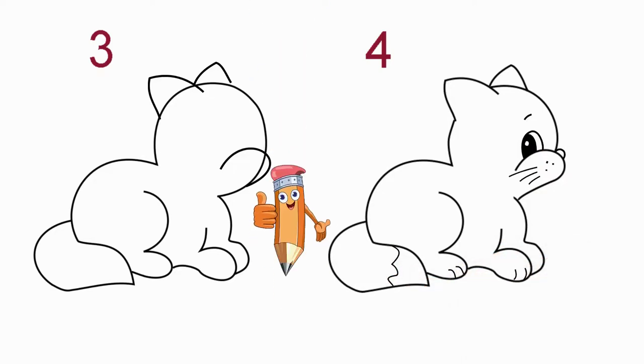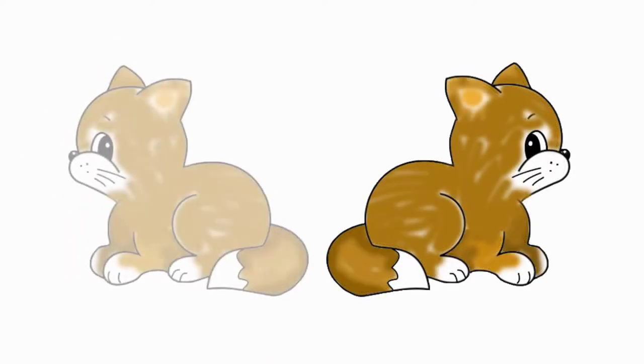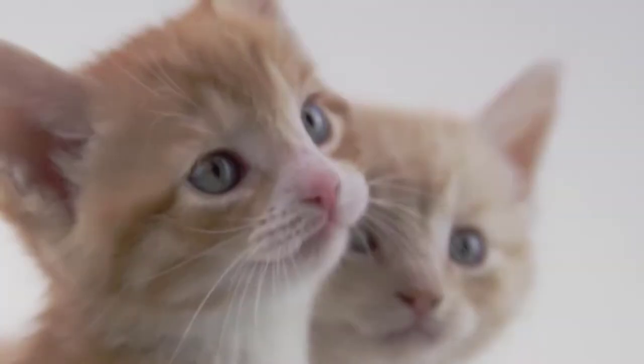Let's draw a mustache. It is very important for a cat to have a mustache. Draw a few black dots near the nose. Let's draw fingers on paws, and on a tail a wavy line.